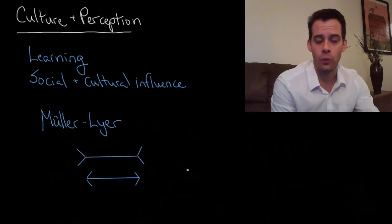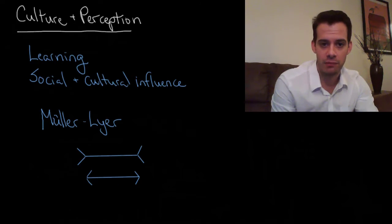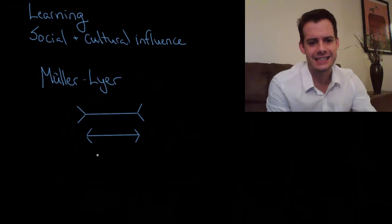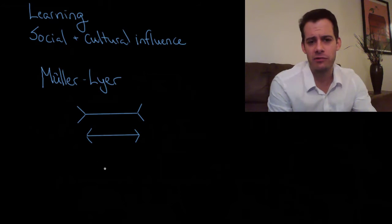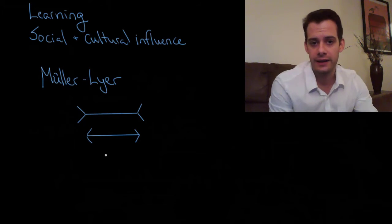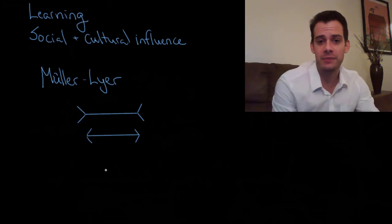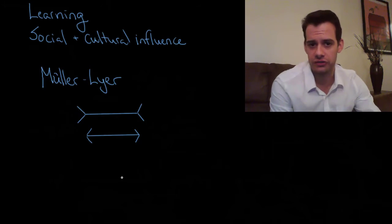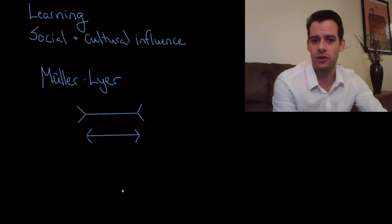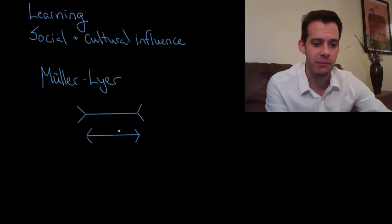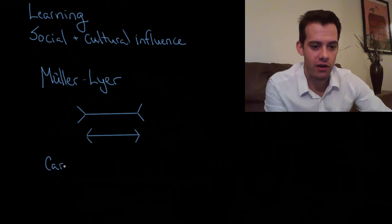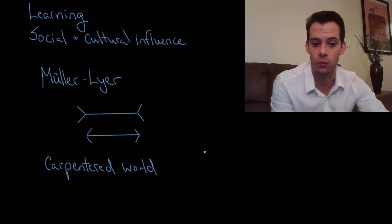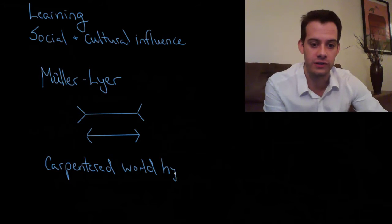So how might this relate to culture? Well, a researcher named Marshall Segall and colleagues decided to test this and they wanted to see if people from different cultures experienced this illusion in the same way. They went around to a number of different cultures and showed people this illusion and found that some people were more susceptible to the illusion than others. So what made a certain cultural group more susceptible? Well, they proposed what's called the Carpentered World Hypothesis.